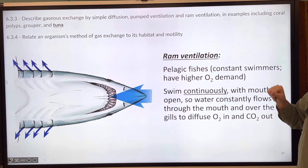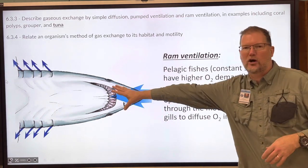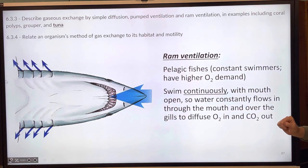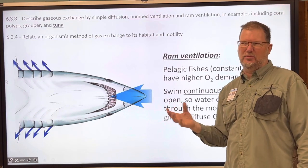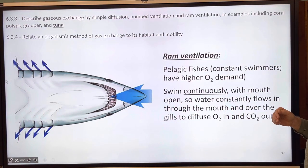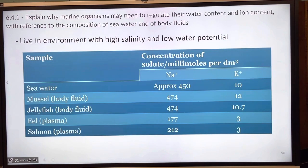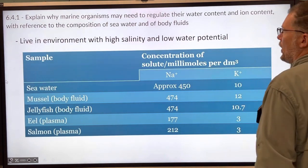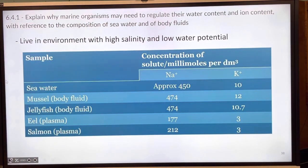Many pelagic fishes do have an operculum — that's mainly true of sharks since they're cartilaginous. Virtually all bony fish have an operculum. Ram ventilating fish have a higher oxygen demand because they're constantly swimming.